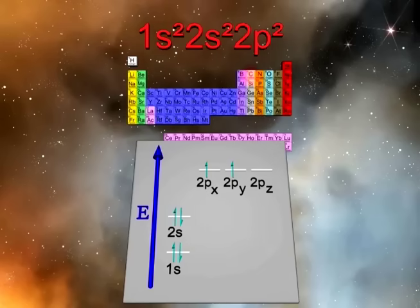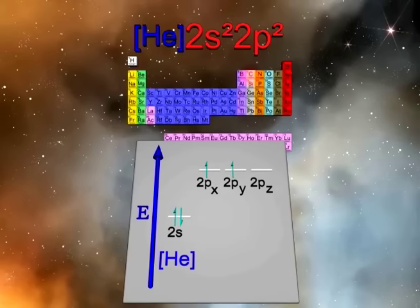However, only the valence or outermost electrons are responsible for bond making and bond breaking. Thus we can ignore the inert noble core electrons, which we can represent here as the helium element. This abbreviated electron configuration quickly allows one to ascertain that there are four valence electrons.